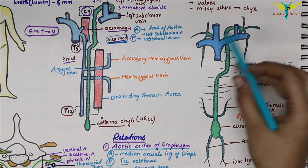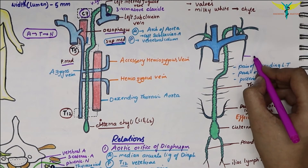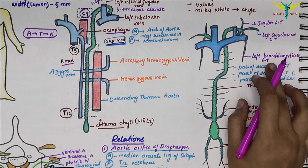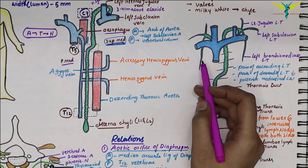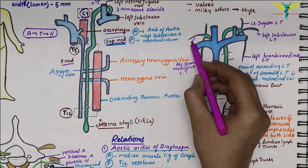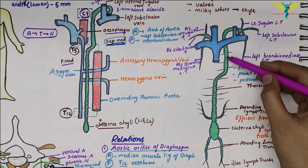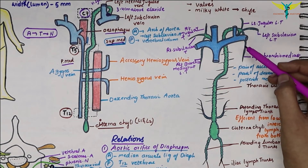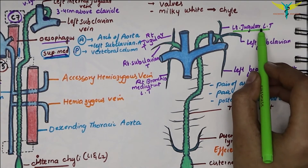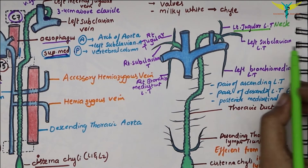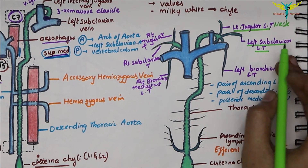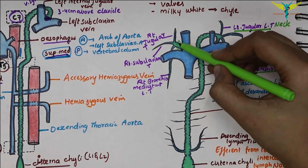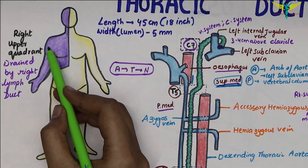In the neck region, the tributaries of the thoracic duct are the left broncho-mediastinal lymph trunk, the left subclavian lymph trunk that drains lymph from the left upper limb, and the left jugular lymph trunk that drains lymph from the neck. On the right side, the right broncho-mediastinal trunk, the right subclavian trunk, and the right jugular trunk form the right lymphatic duct, which drains lymph from the right upper quadrant of the body.